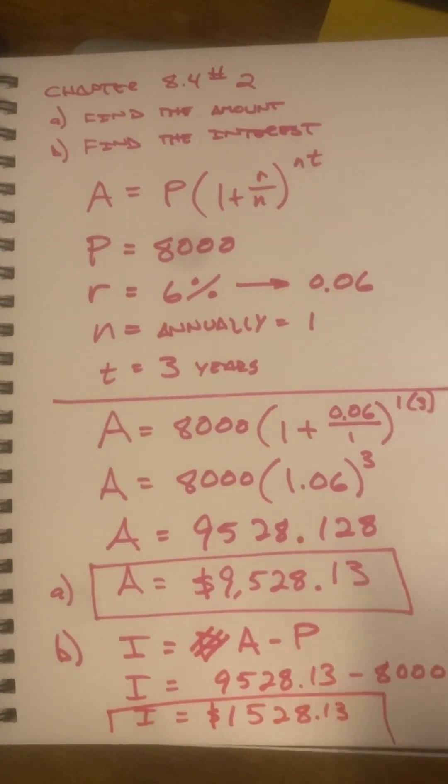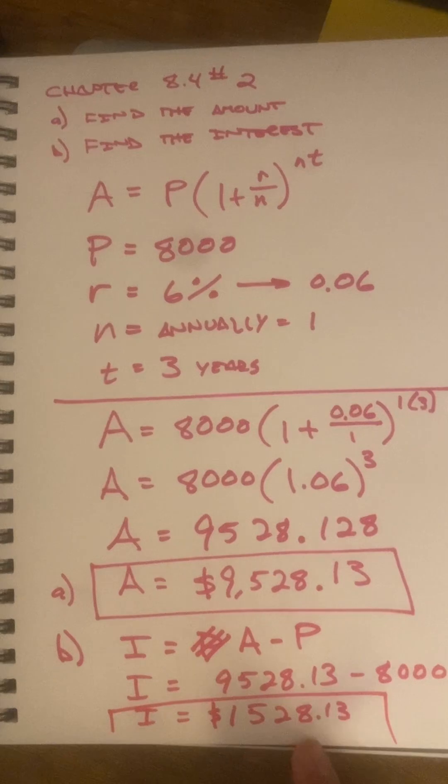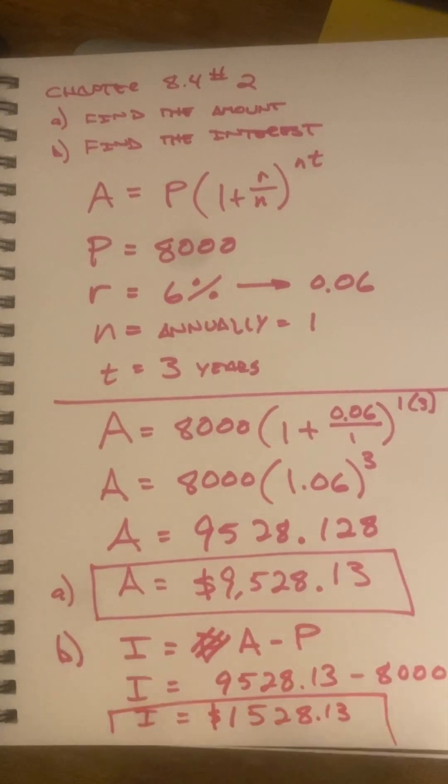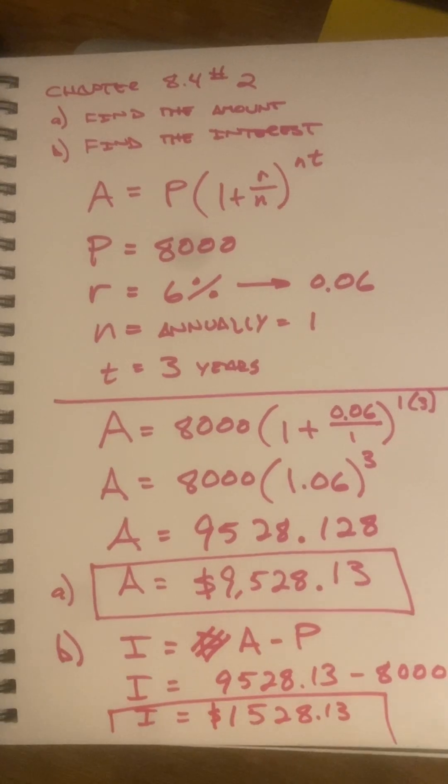So, with this investment, you will make $1,528.13 over three years doing absolutely nothing. And this, friends, is how the rich get richer. Thank you.